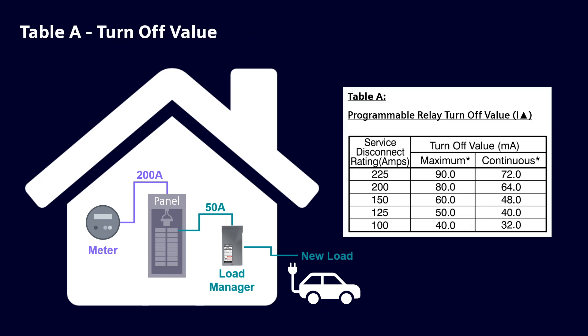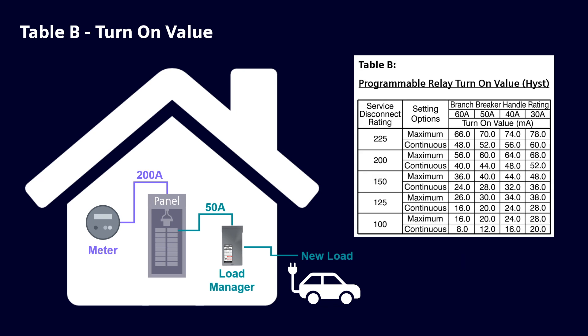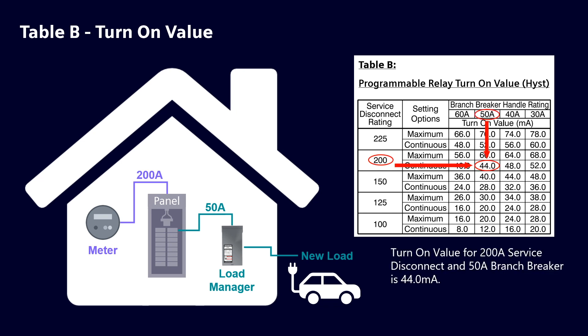On table A, the turn-off value for a 200-amp service disconnect is 64.0 milliamp. On table B, the turn-on value for a 200-amp service disconnect and a 50-amp branch breaker is 44.0 milliamp.